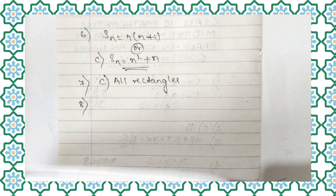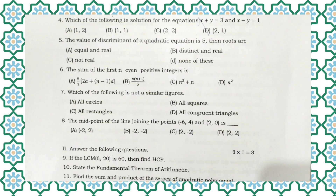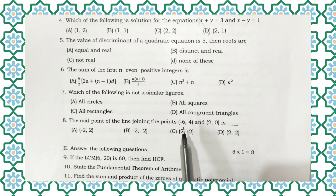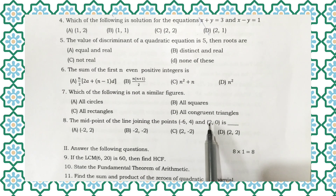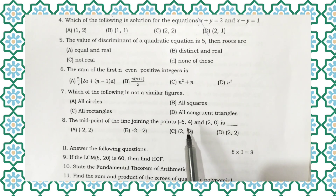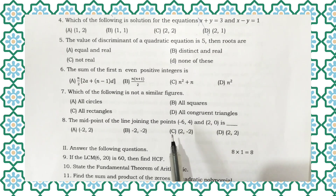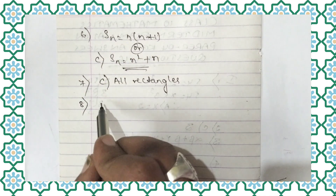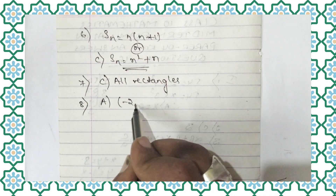Next, let us move to the 8th question. The midpoint of the line joining the points (-6, 4) and (2, 0). Midpoint x-coordinate: (-6 plus 2) by 2 equals -4 by 2 equals -2. Midpoint y-coordinate: (4 plus 0) by 2 equals 2. So the answer is (-2, 2), option A.